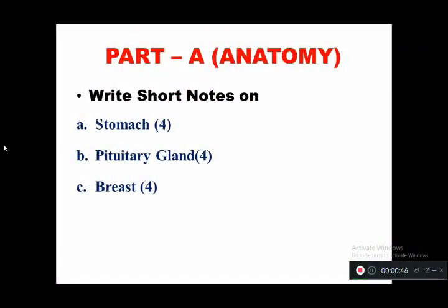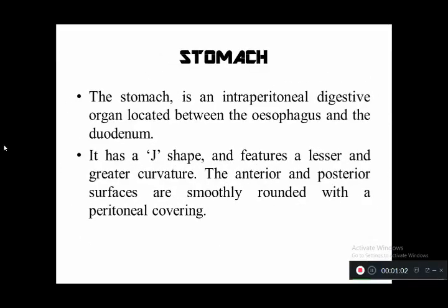Each question carries four marks: the stomach, pituitary gland, and the breast. Now we see the first question — the stomach. The stomach is an intraperitoneal digestive organ located between the esophagus and duodenum. The shape of the stomach is J-shaped and it has two curvatures: lesser and greater curvature. The anterior and posterior surfaces of the stomach are covered with peritoneal layers.